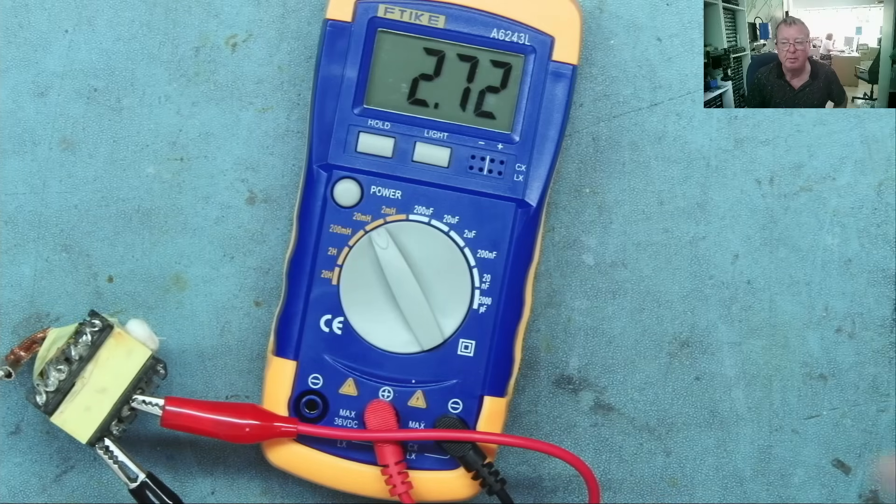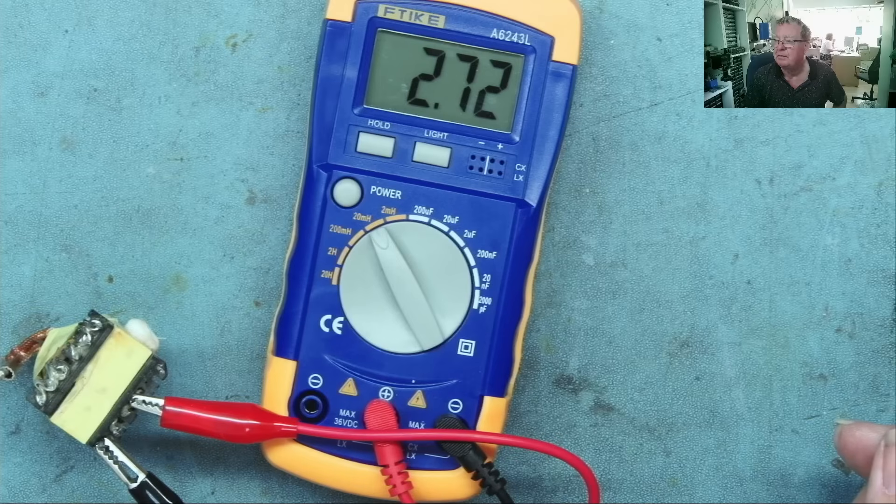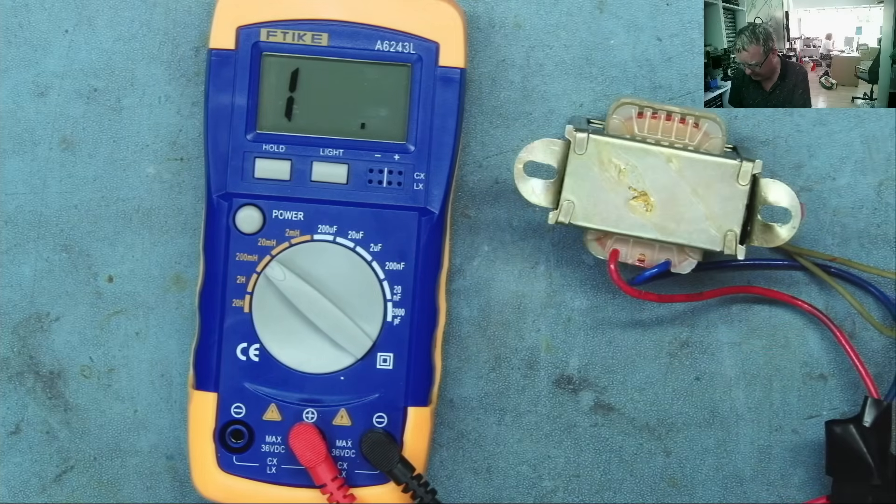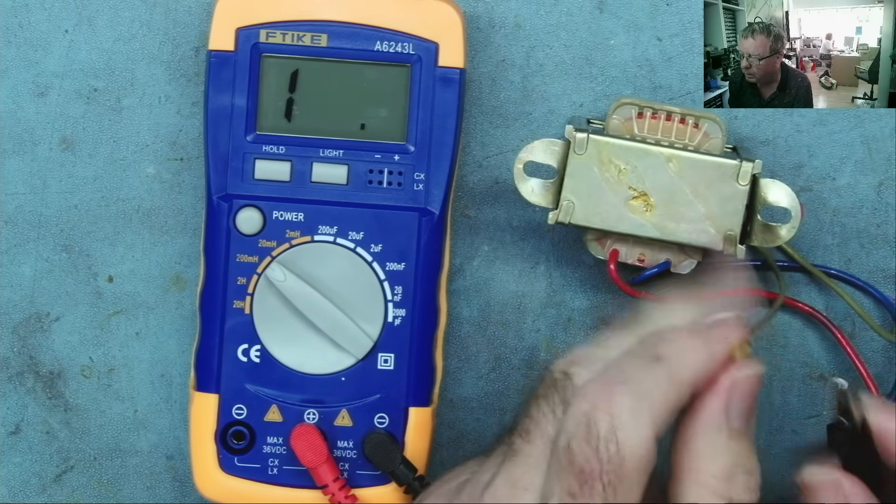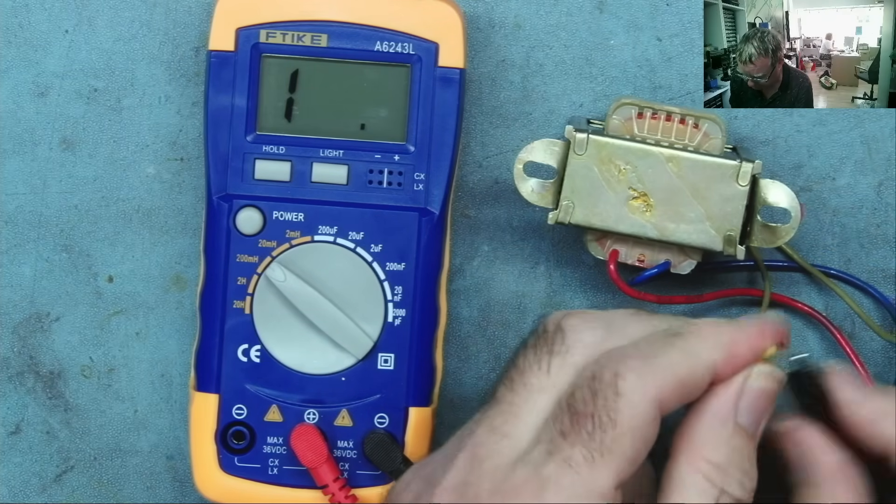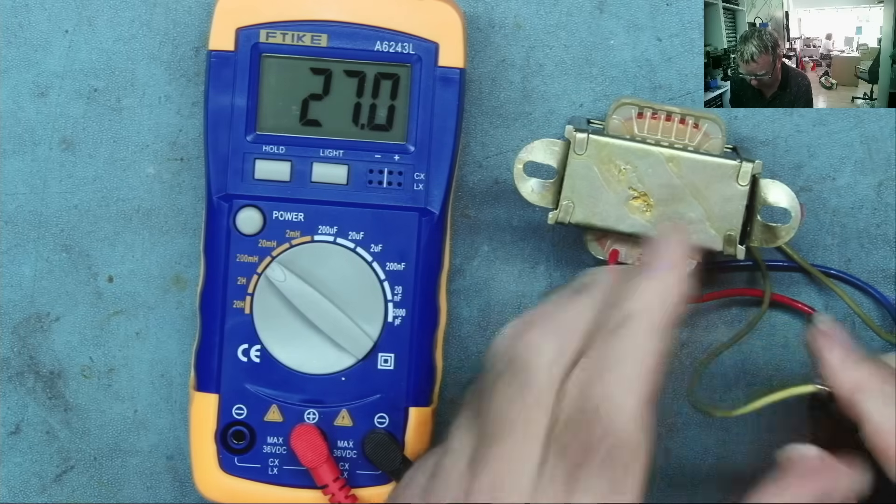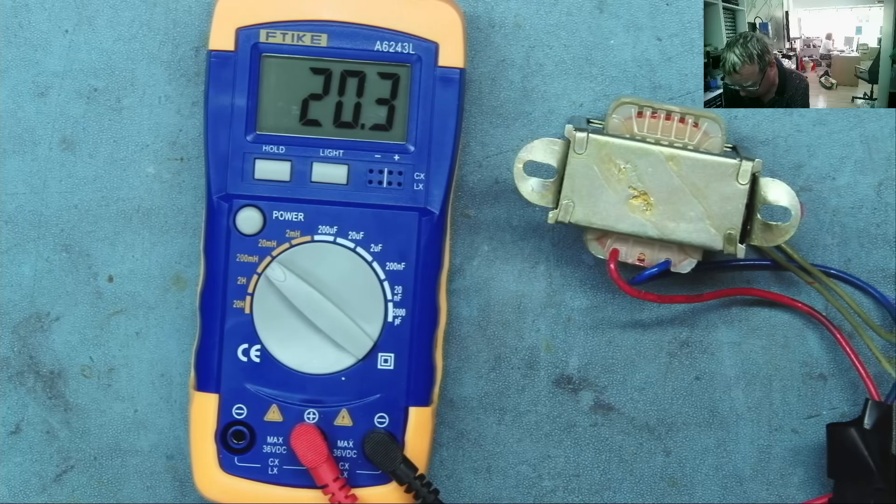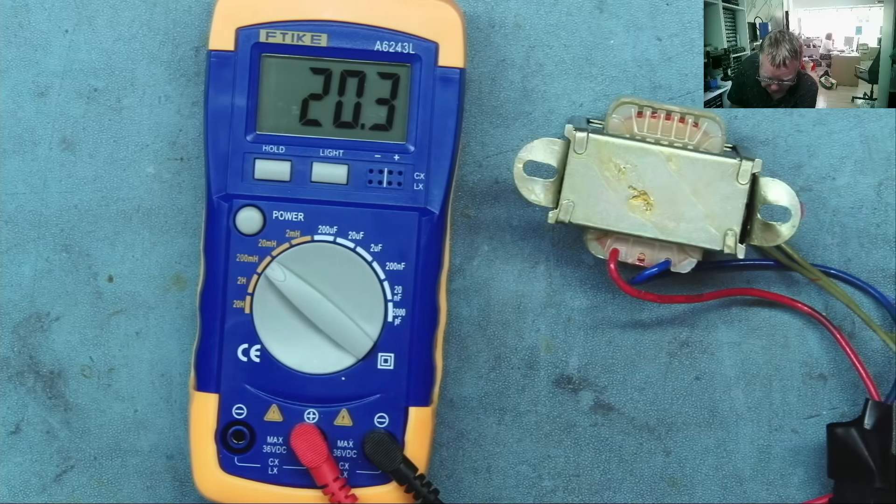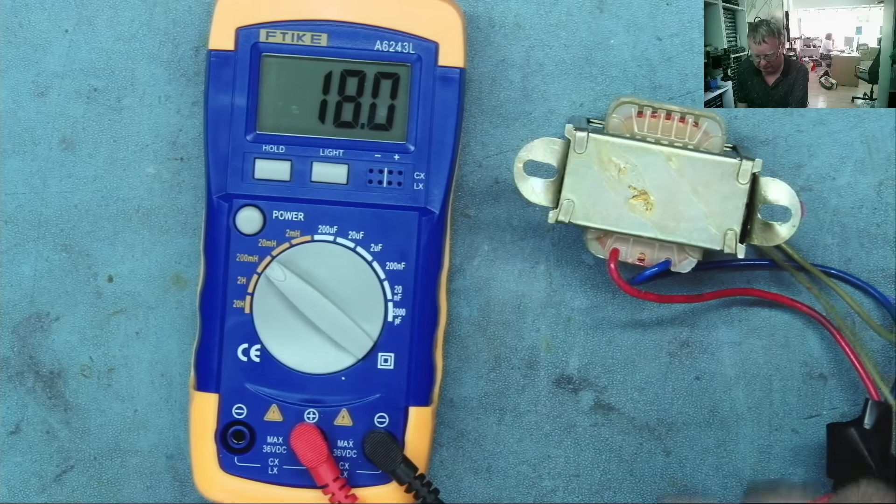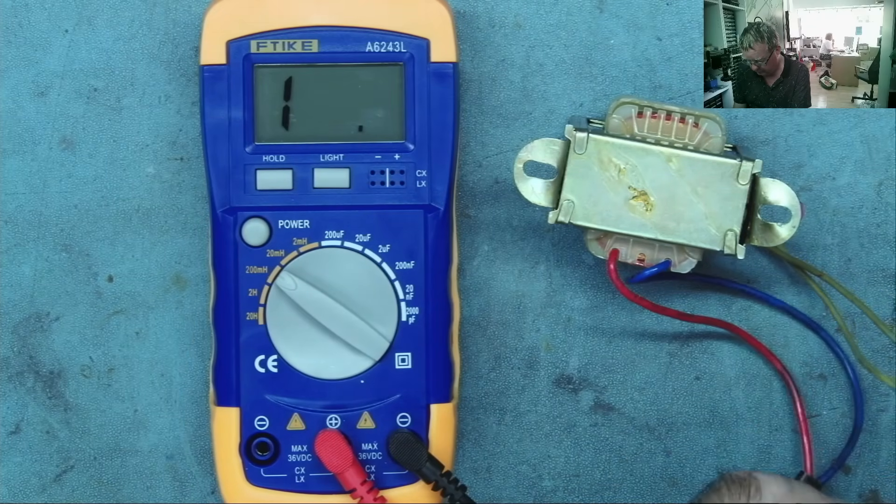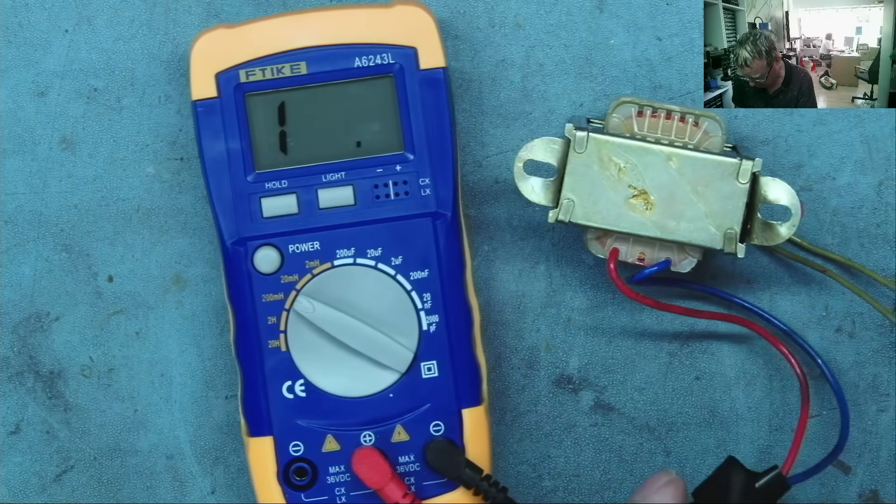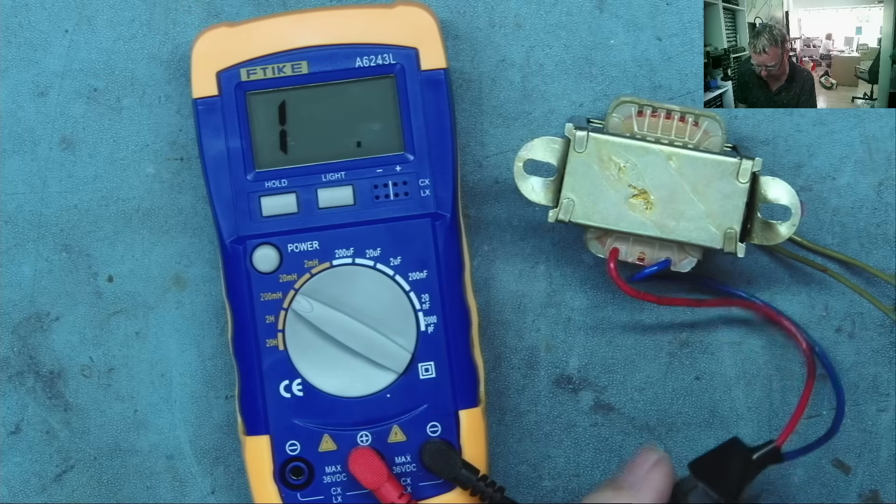This transformer reads 2.7 millihenries. So I have a transformer here. I don't know what this should read, to be quite honest. But that winding, which is the secondary, reads 20 millihenries, which seems reasonable to me.